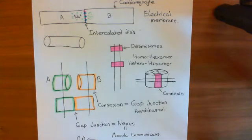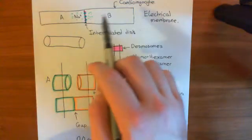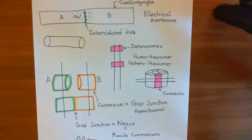And then that will open and it will cause the action potential to propagate along cardiomyocyte B. So basically, what these gap junctions allow is they allow an action potential in cardiomyocyte A to induce an action potential in cardiomyocyte B.